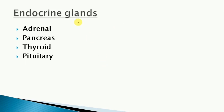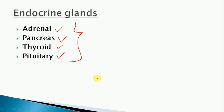We need to study four endocrine glands in this chapter: the adrenal gland, pancreas gland, thyroid gland, and pituitary gland. In the next video we will study these glands in detail - where they are found and what their functions and secretions are. This was the introduction of the endocrine system.